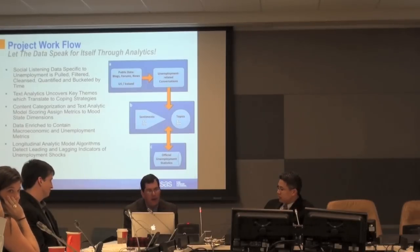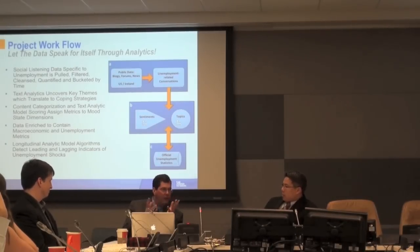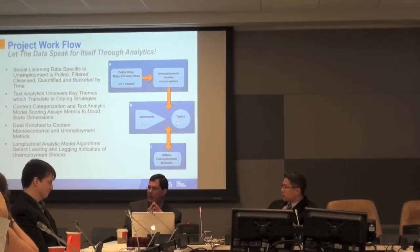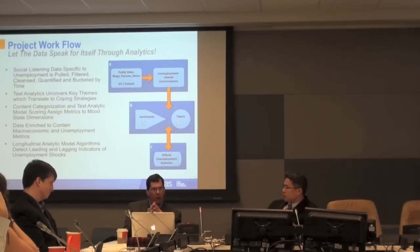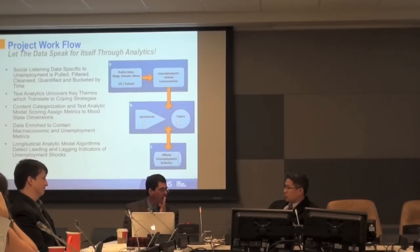We use text analytics to find key themes within the corpus of documents with respect to unemployment. When we looked across Ireland and the U.S., key themes that emerged included concern around loss of housing, cuts in discretionary spending, and changes in transportation modes. These naturally manifest as coping strategies populations are having to take after seeing spikes in unemployment. We also enrich the data with macroeconomic sources and unemployment trends for the last 24 months, then apply analytics to find leading indicators for spikes in unemployment and coping strategies that follow.